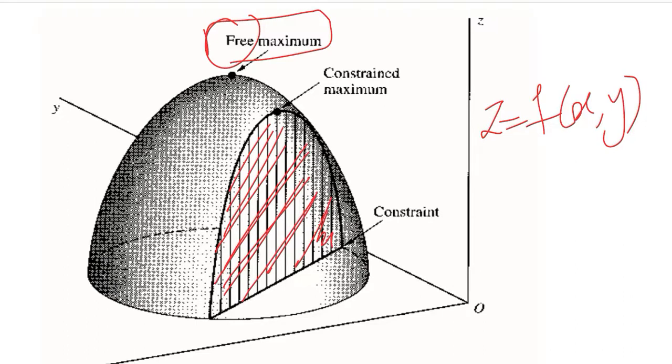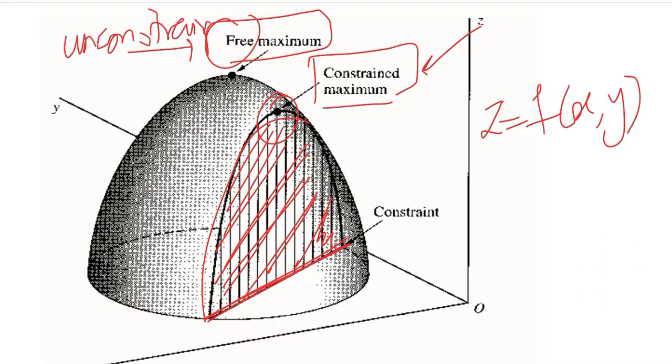So this constraint actually is restricting our approach to this border, and at this border this is the highest possible point. So it's a maximum, but it is a constrained maximum. That's how we differentiate between a free maximum and a constrained maximum. We can also call this as unconstrained maximum because there is no restriction in this maximum.